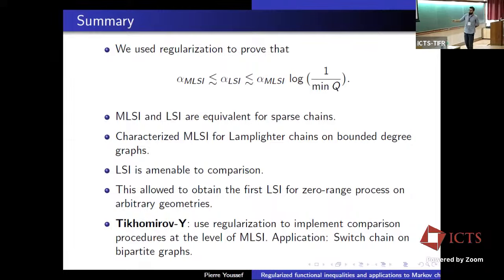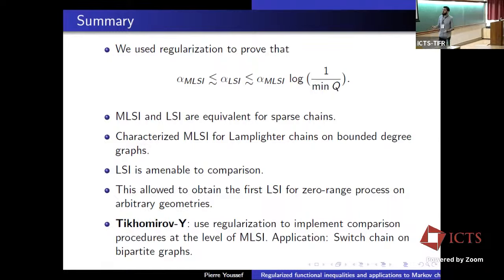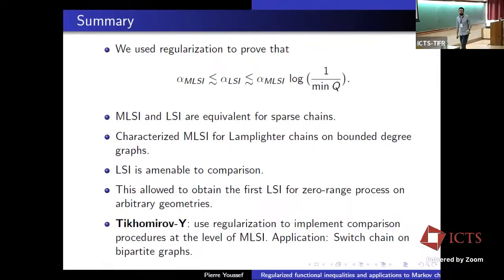For the last part of the talk, let me tell you a bit more about the switch chain on bipartite graphs. The objects of interest are D-regular bipartite graphs on N vertices. The goal is to generate them uniformly — a natural Markov chain is the switching chain. It looks at two parallel edges without crossings and switches them: you destroy two edges and switch. In terms of adjacency matrices, you look at a 2x2 minor and switch it from (1,0;0,1) to (0,1;1,0).